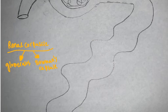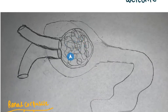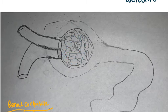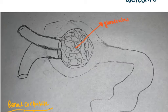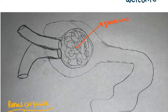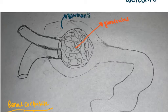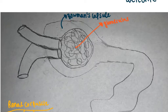If we look at the diagram, the glomerulus is this tuft of capillaries bunched up together. The Bowman's capsule is the structure that wraps around the glomerulus. Together these two make up the renal corpuscle.